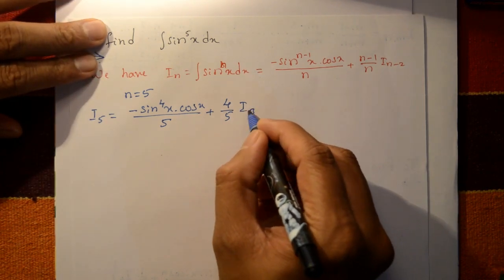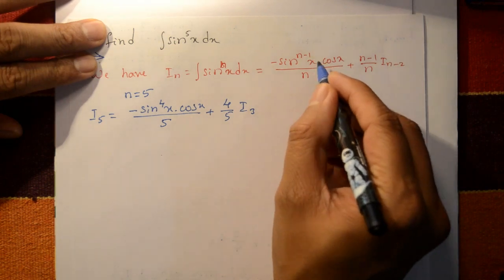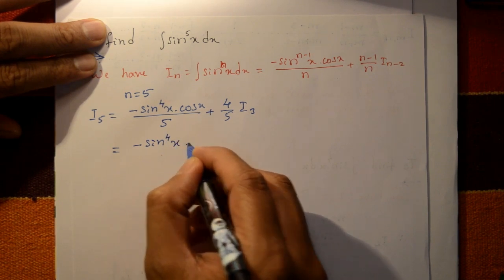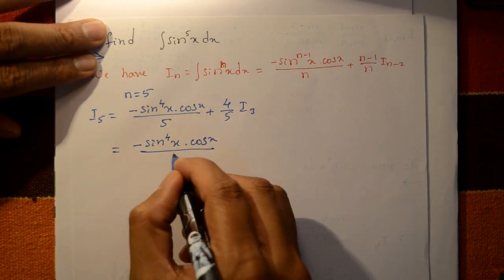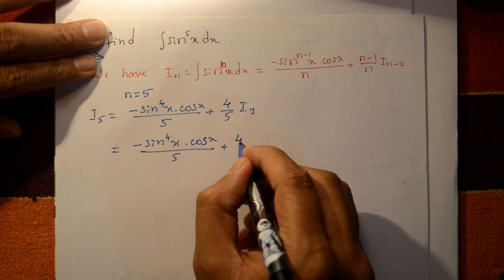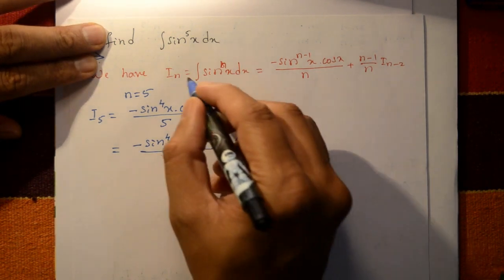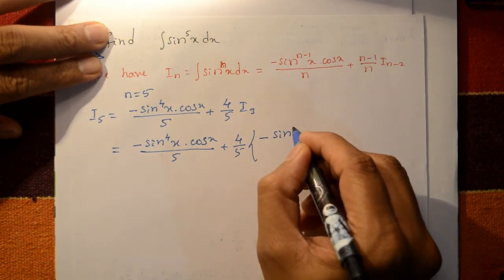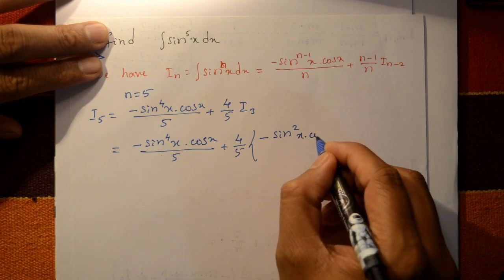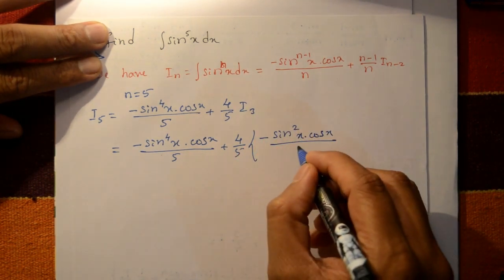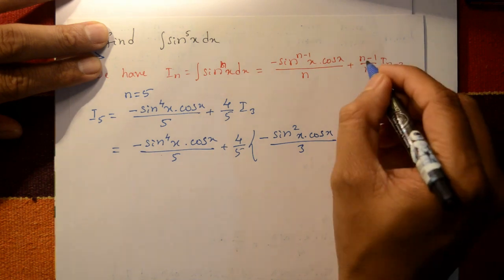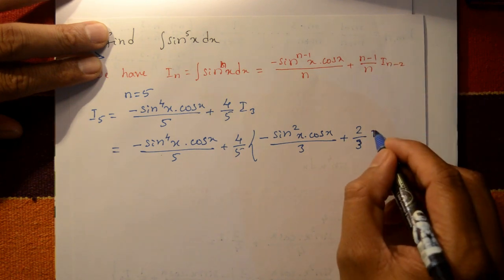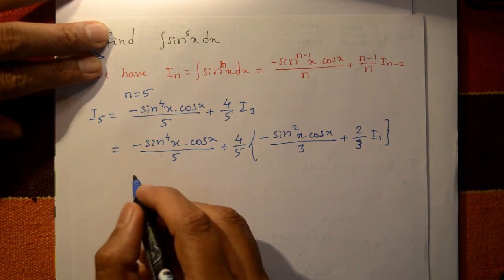Now find I₃ by putting n equal to 3. I₃ equals minus sin squared x into cos x divided by 3, plus 2 by 3 into I₁.